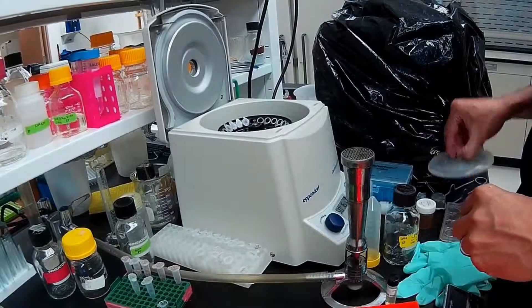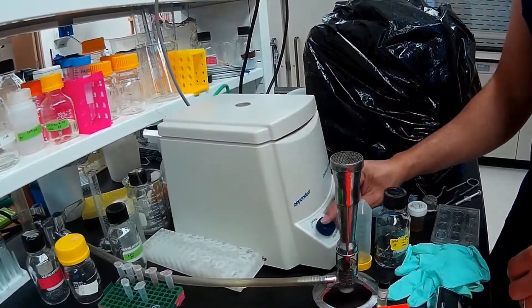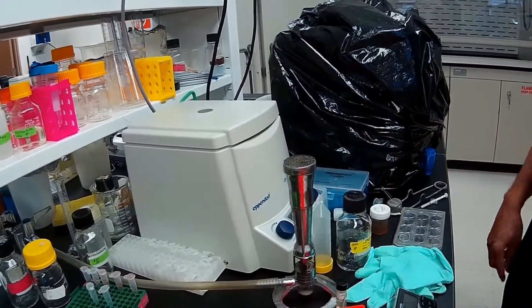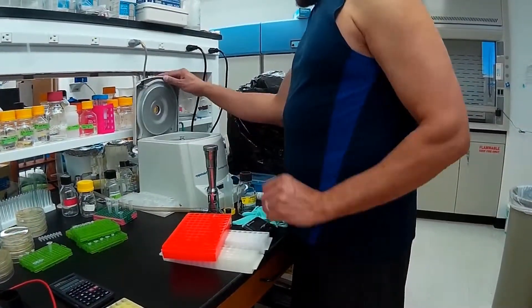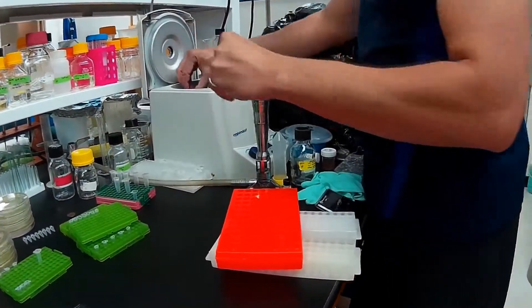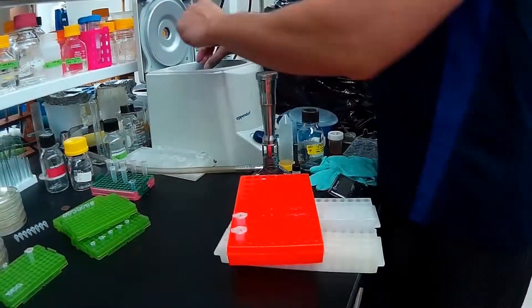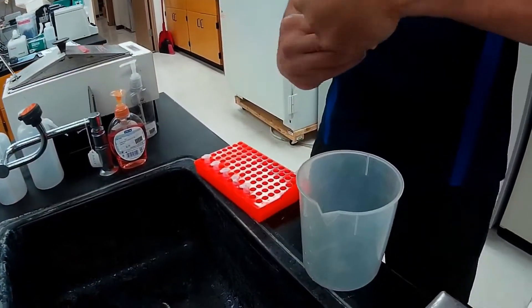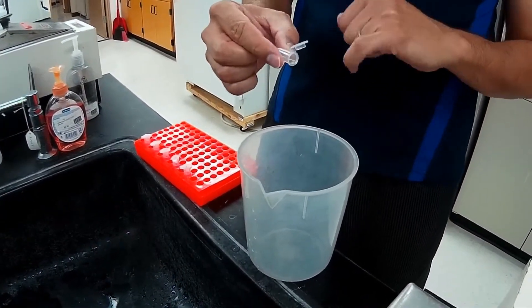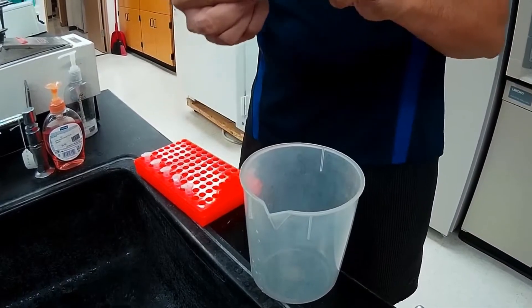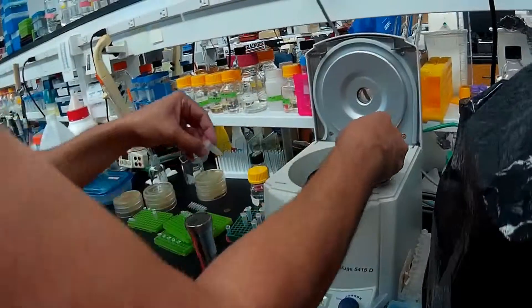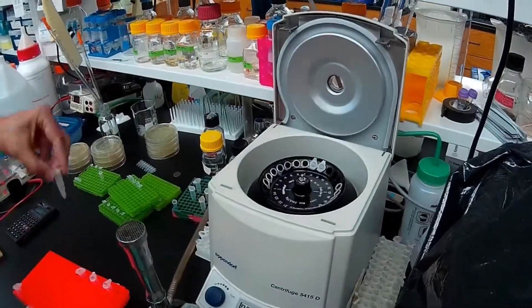I'm going to give a very brief spin, just to collect the 70% ethanol in the bottom of the tube. It can be just five to ten seconds. Discard the 70% ethanol and close the tube gently.